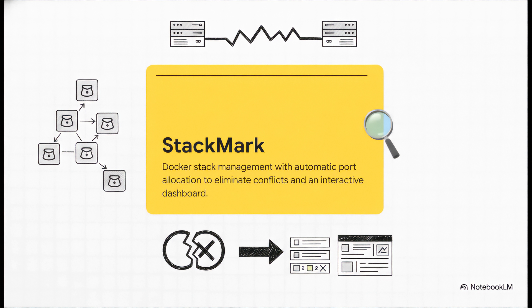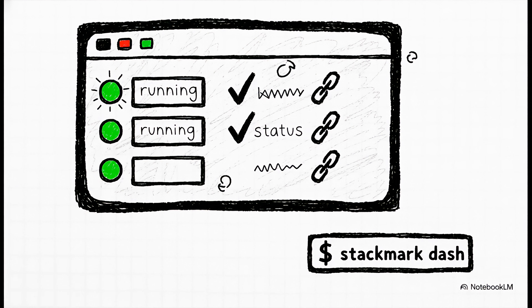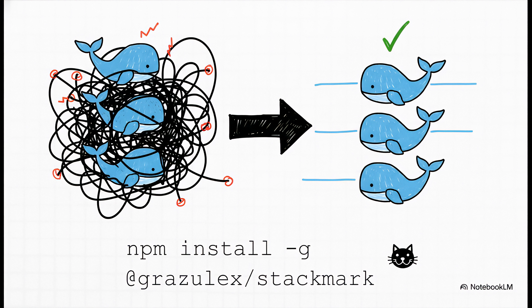Now for that second challenge: running our services. If you've ever wanted to throw your computer out the window because of a 'port already in use' error, you are going to love Stackmark. It's a Docker stack manager that completely eliminates port conflicts by automatically assigning a unique port to every single service. And get ready, because this is the command you're going to fall in love with: Stackmark dash. It fires up this amazing real-time dashboard right in your terminal. You can see all your running stacks, their status, their URLs — all updated live. It's basically mission control for your local microservices. Here's the GitHub repo and the install command for Stackmark.